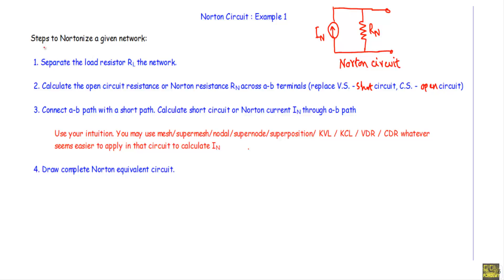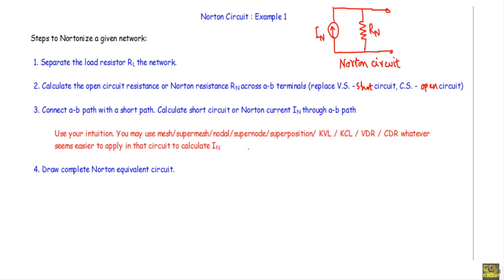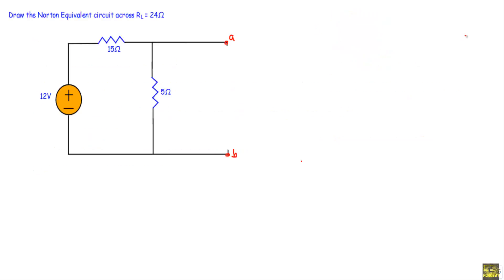These are the steps I will follow to convert any circuit to a Norton equivalent circuit. We need to draw the Norton equivalent circuit across the load resistor R_L equal to 24 ohms. This is our load resistor — let's say this is terminal A and this is terminal B. At the first step we will separate the load resistor R_L from the network, keeping that load resistor of 24 ohms aside.